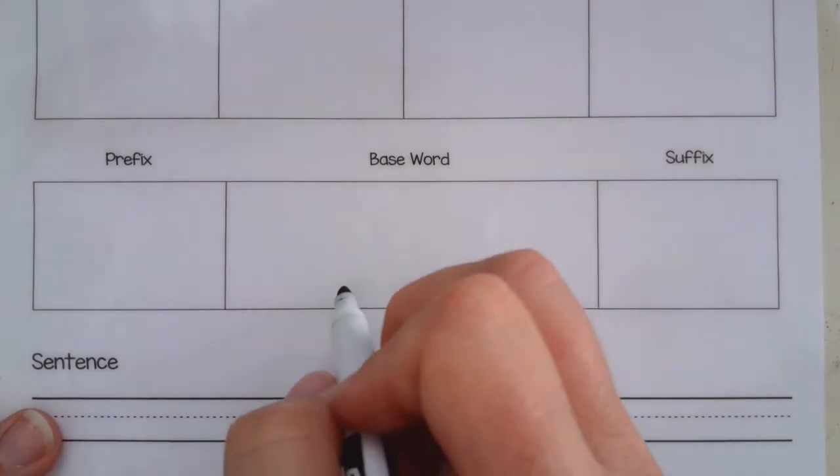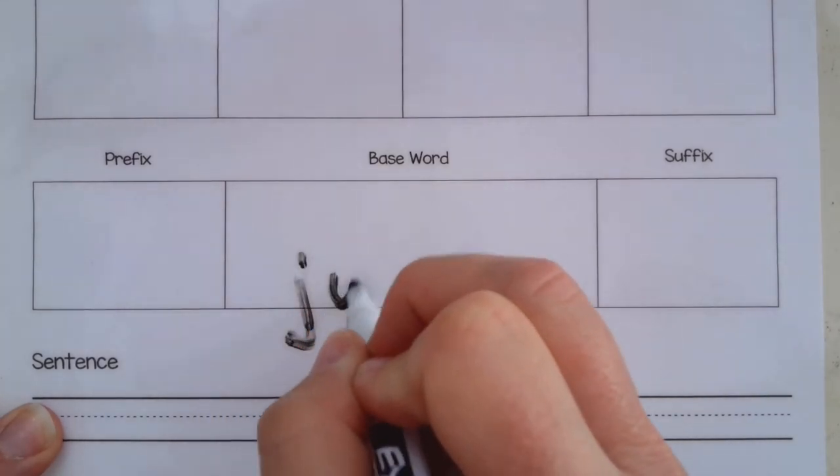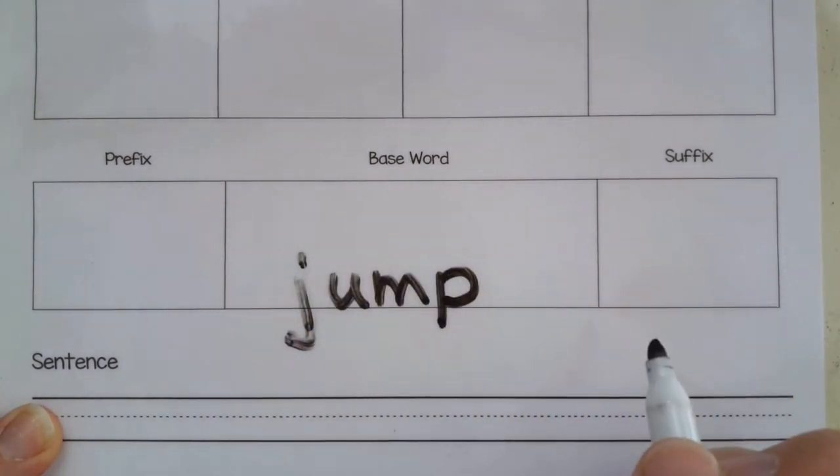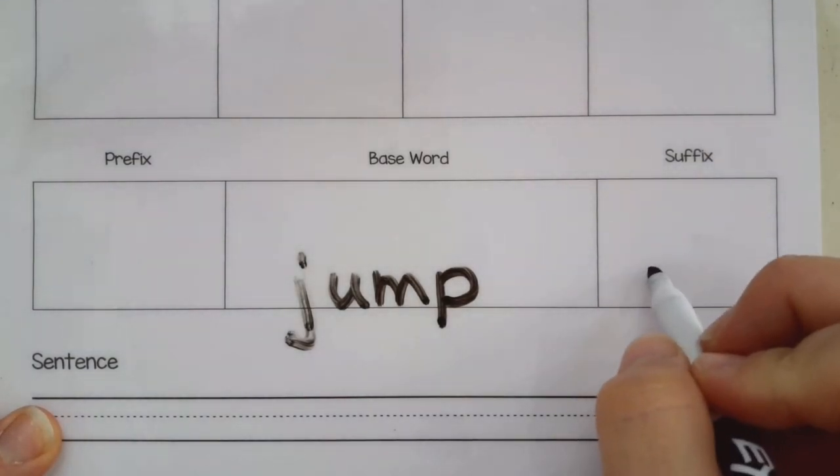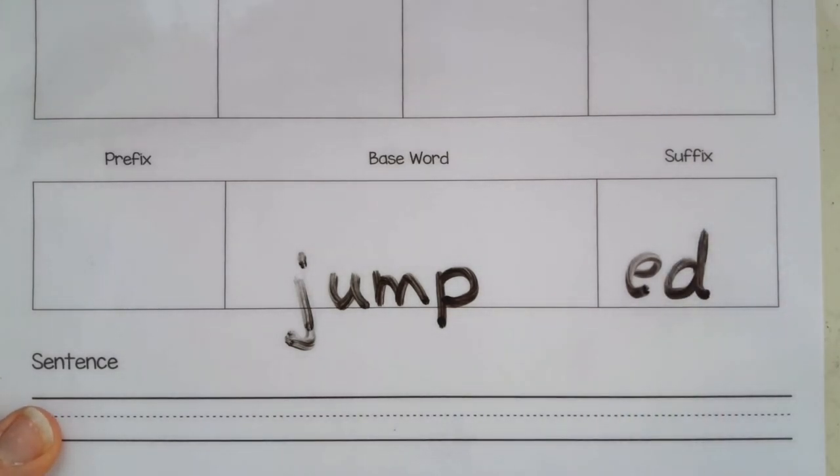So if I'm doing jumped we would have them say jump - looks like I need a new expo marker. If you do this you have to have lots of expo markers on hand. Jump and then what's the suffix? Well we hear t but we know that that's going to be ed. That's the time traveler suffix. We're making this past tense. And then they erase and read jumped.